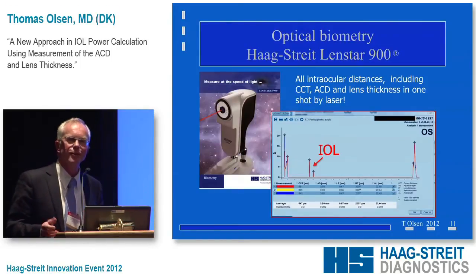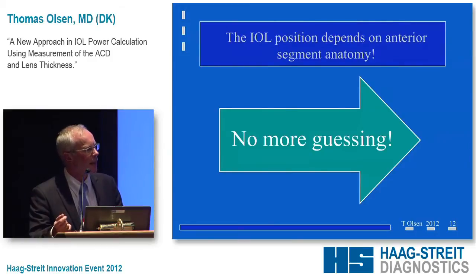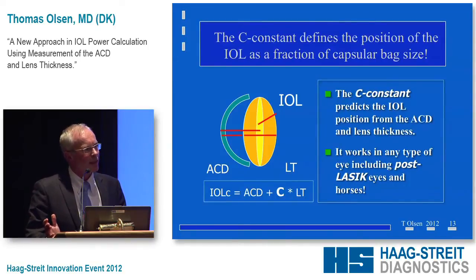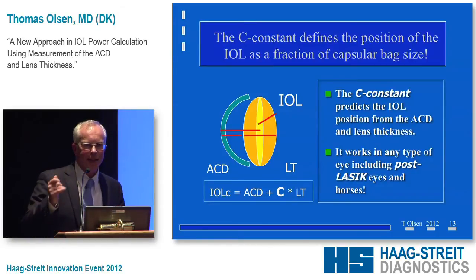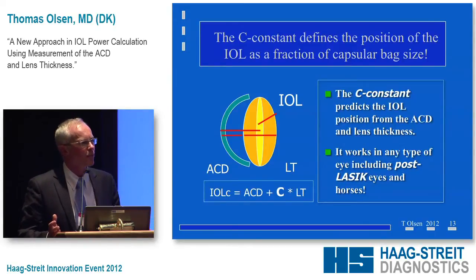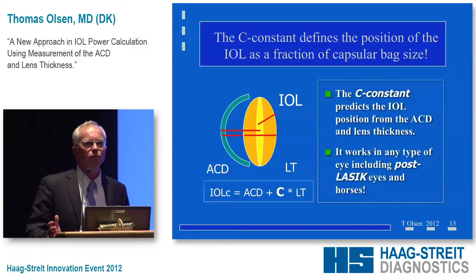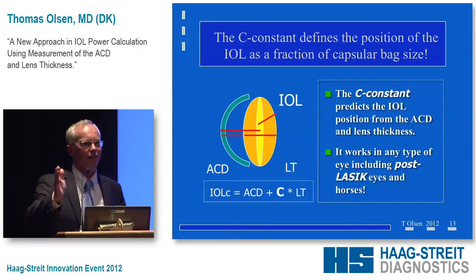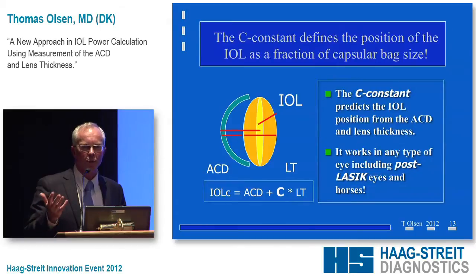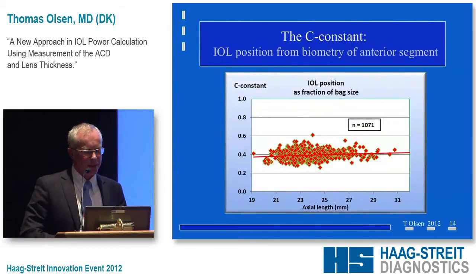I would like to use the information of where the IOL ends up in the eye after surgery. We come up with a really simple concept: the C constant describes the position of the implant in the eye as a variable derived from the anterior chamber depth and lens thickness. It's a fraction of the lens thickness. The C constant of the crystalline lens is 0.5 — 50% is exactly in the center. The same constant applies to different IOL types, and the normal fraction is about 0.4 to 0.5.